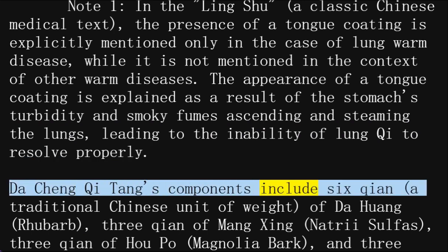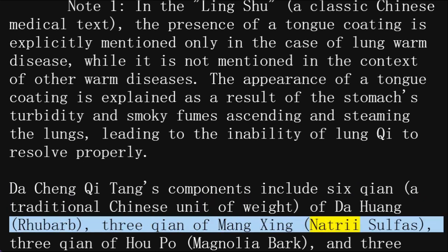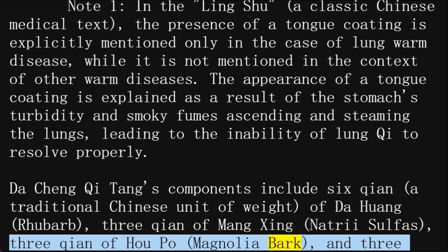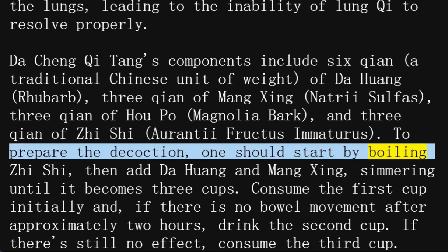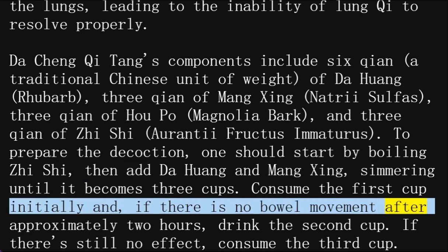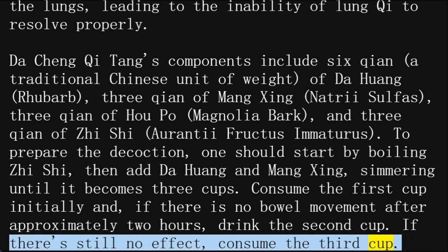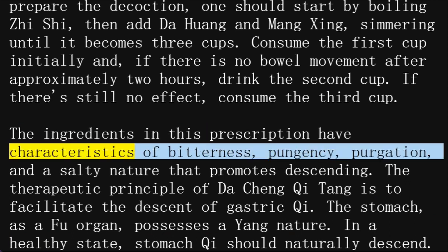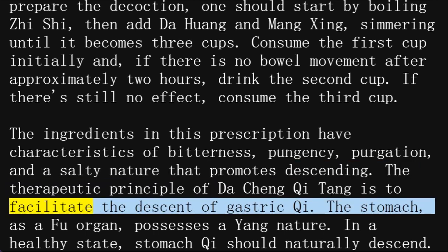Da Cheng Qi Tang's components include 6 qian of da huang (rhubarb), 3 qian of mangxing (natrii sulfas), 3 qian of hu po (magnolia bark), and 3 qian of zhi xia (Aurantii Fructus Immaturus). To prepare the decoction, one should start by boiling zhi xia, then add da huang and mangxing, simmering until it becomes 3 cups. Consume the first cup initially and, if there is no bowel movement after approximately 2 hours, drink the second cup. If there's still no effect, consume the third cup. The ingredients in this prescription have characteristics of bitterness, pungency, purgation, and a salty nature that promotes descending. The therapeutic principle of Da Cheng Qi Tang is to facilitate the descent of gastric qi.